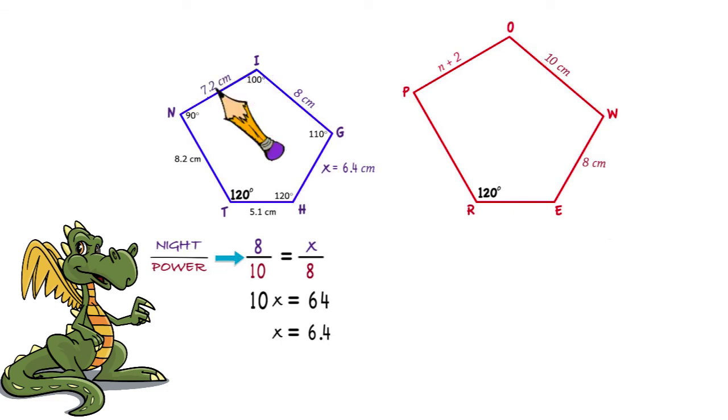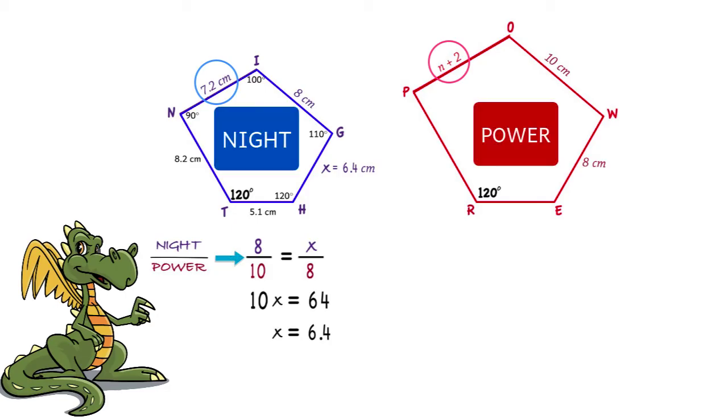We are told that NI is 7.2 centimeters, and PO is n plus 2 centimeters, and we wanted to find the value of n. Again, we will set up our similarity ratio. Remember, we are still looking at knight and power, so our ratio is 8 to 10.